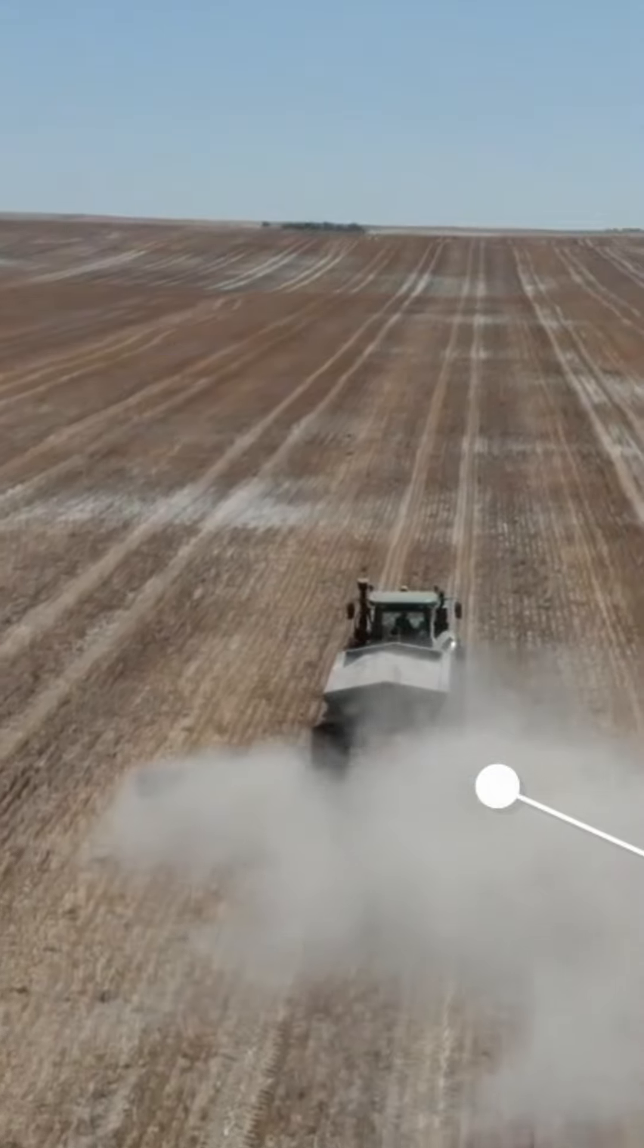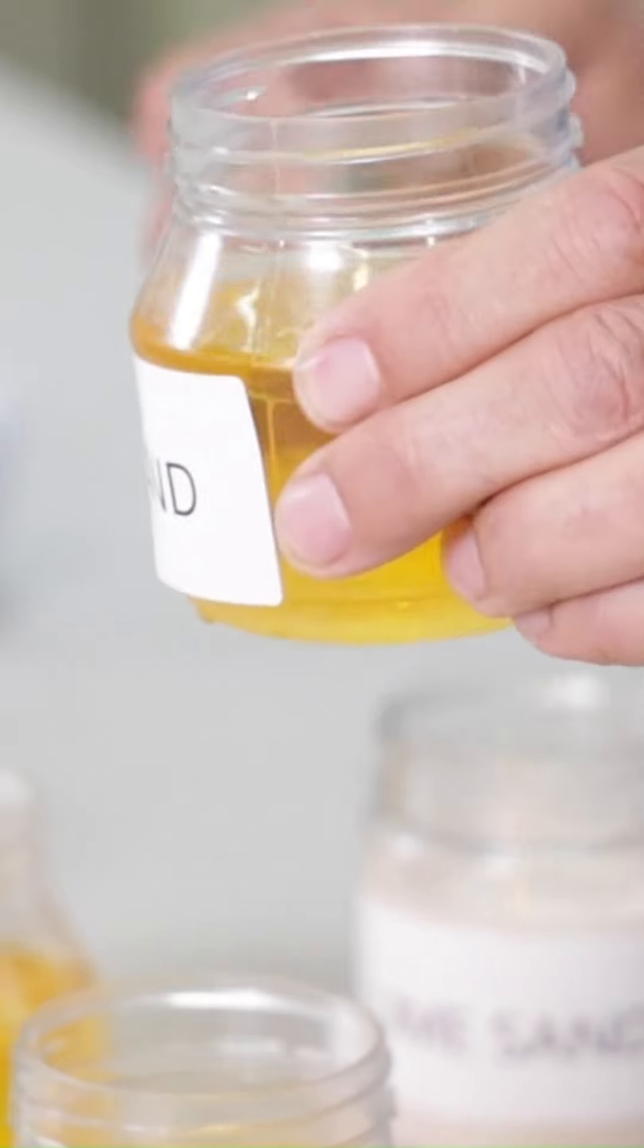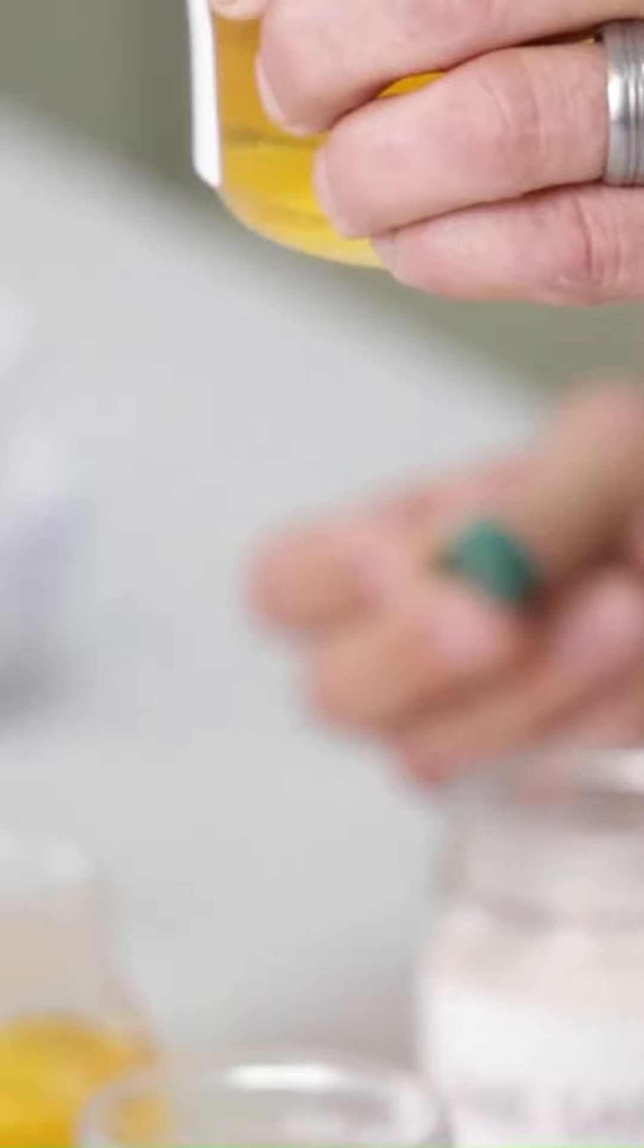Bulk NV stands for Bulk Neutralising Value. This is a measure of the potential of the limesand to neutralise the acid in the soil.